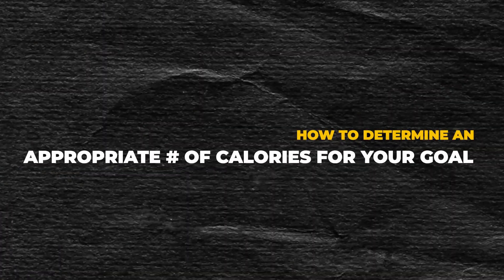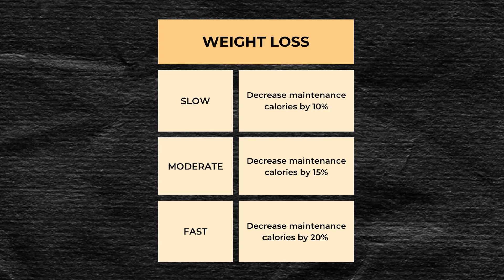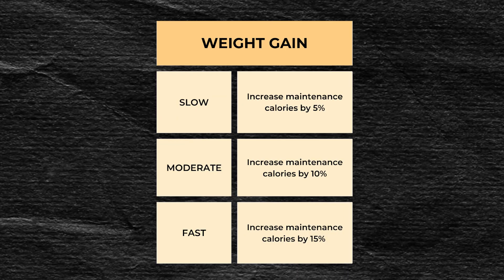Next, we need to determine an appropriate number of calories for your goal. After determining your maintenance calorie target, you need to adjust it by either increasing or decreasing it depending on whether you're trying to gain or lose weight. For weight loss at a slow, moderate, or fast pace, I recommend decreasing your maintenance calories by 10, 15, or 20%, respectively. For weight gain at a slow, moderate, or fast pace, I recommend increasing your calories by 5, 10, or 15%, respectively. Keep in mind that faster weight loss may make it more difficult to adhere to your diet, and you'll likely feel hungrier, less energized, and pretty grumpy throughout the day.